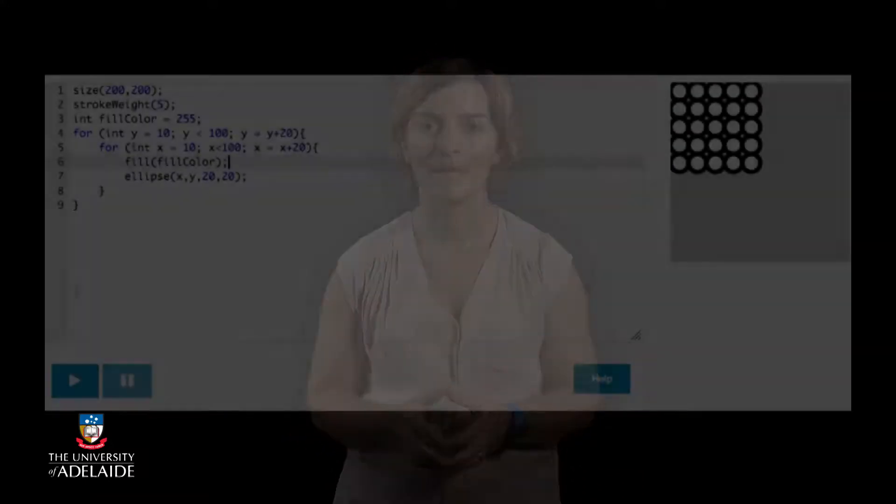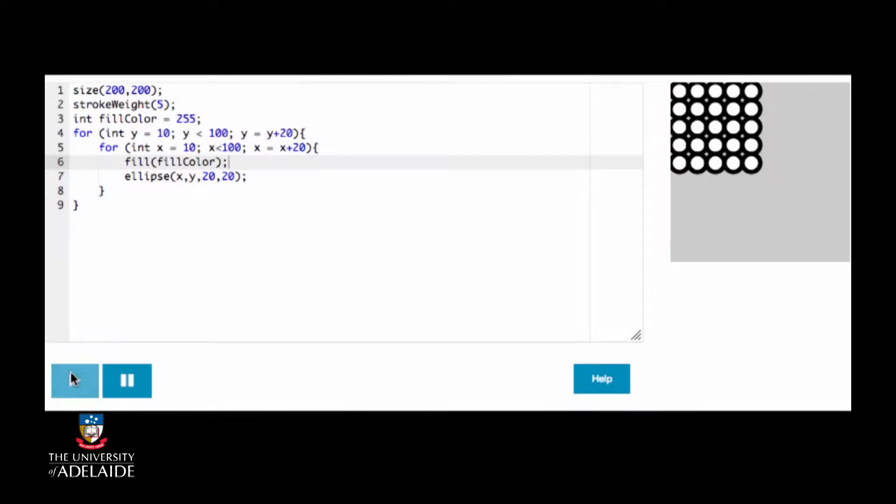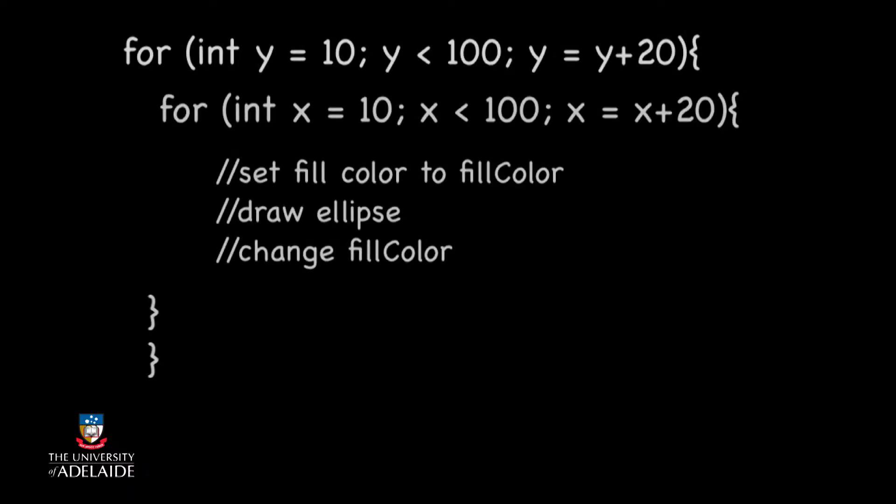Do you think this code changes anything? Try it with pen and paper. Do the values of the fill color variable change? That's right, they don't. Let's run the code and see. Indeed, nothing. To make the fill increasingly dark, we will decrease 10 from the fill color variable after each drawing of the ellipse. The pseudocode for this will look like this. The code for this pseudocode will look like this.